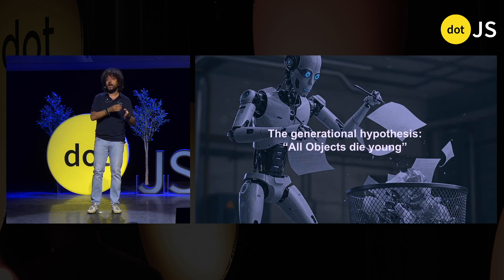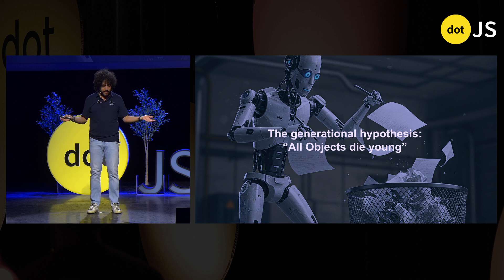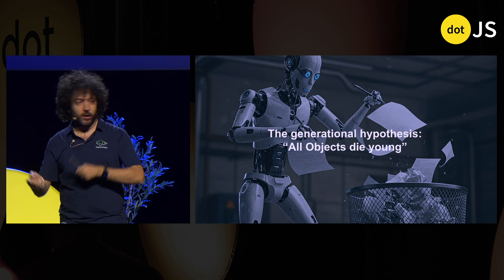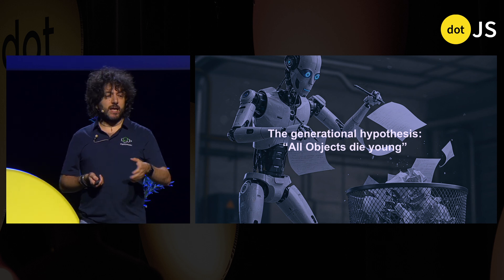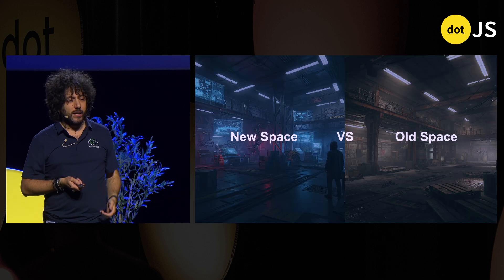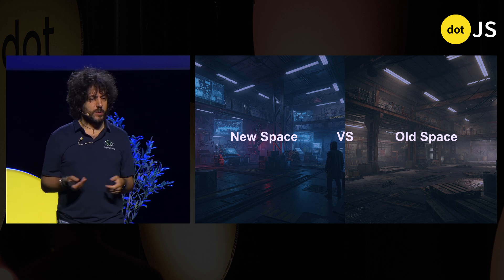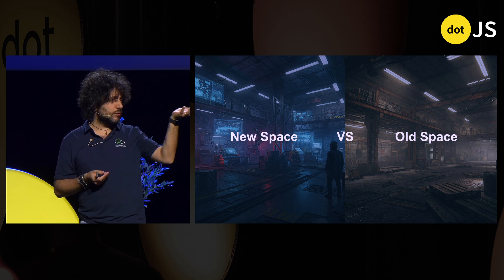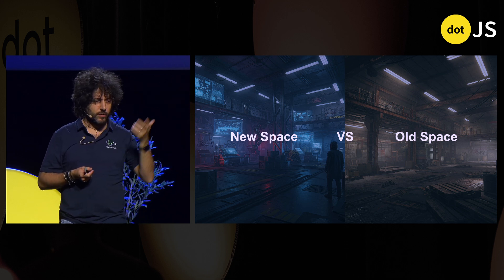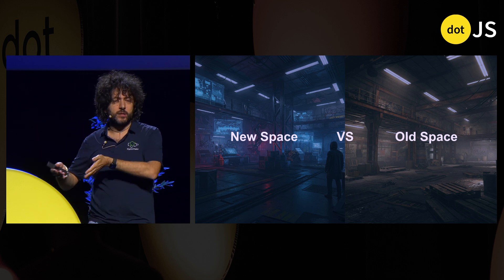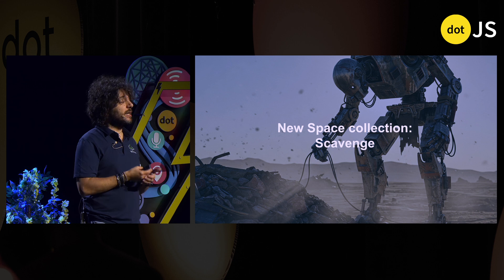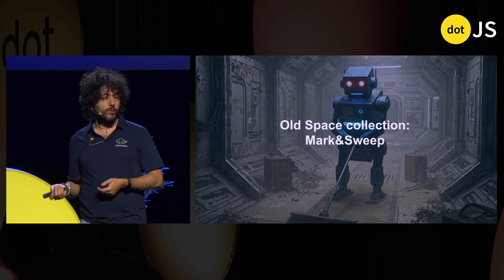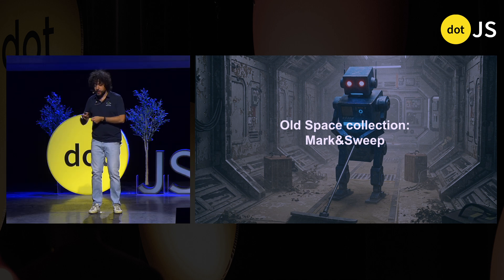The theory behind all garbage collectors is: all objects die young. Most of the time in a web app, objects are created and thrown away — create an object, throw it away — that's the cycle of a request. In V8, you have something called New Space where all new objects are created, and Old Space where you store objects that are getting old. In New Space, they use a garbage collector called Scavenge. In Old Space, there's a much slower garbage collector called mark-and-sweep that cleans up old storage.